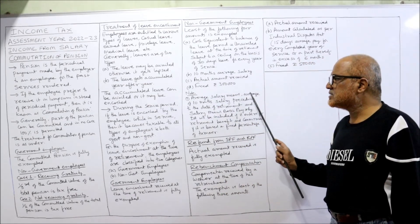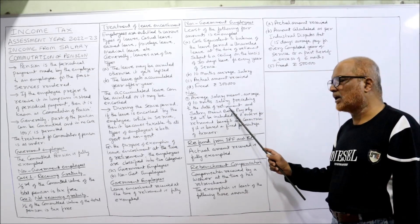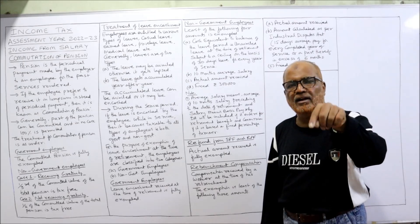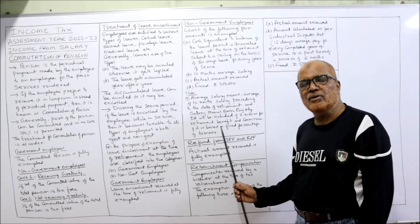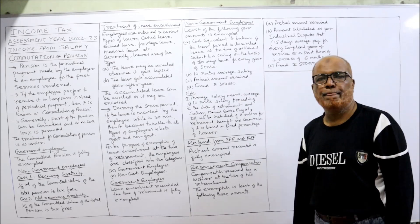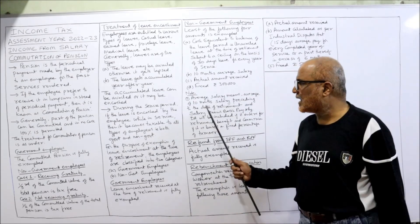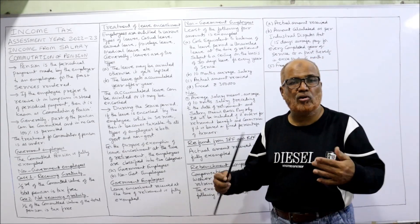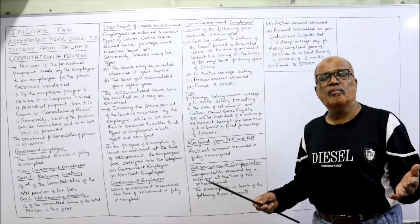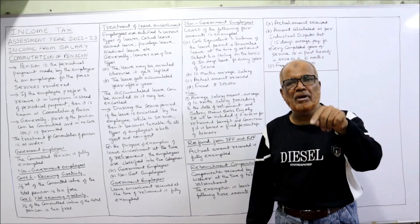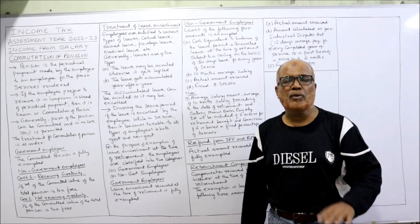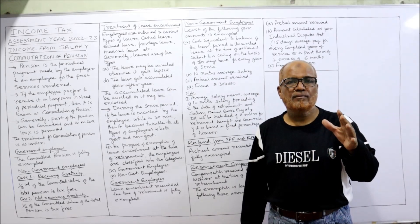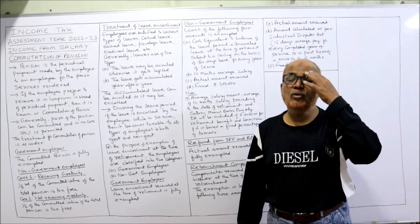Average salary means the average of 10 months salary preceding the date of retirement. Salary here means basic pay only. DA will be included if it enters into retirement benefits, and commission if it is based on a fixed percentage of turnover. You should not make any mistake while calculating salary because these are specific provisions given by the Income Tax Act and we cannot change them. Students often score less marks in income tax mainly because they forget the provisions.